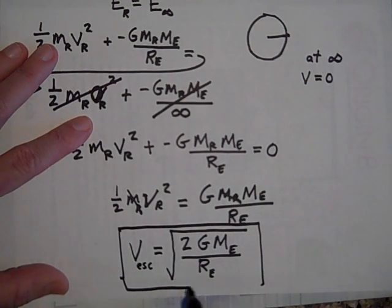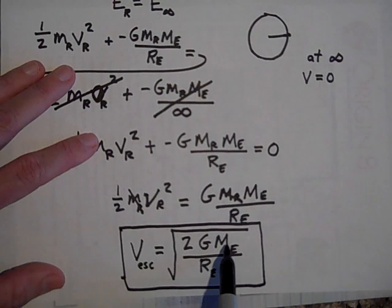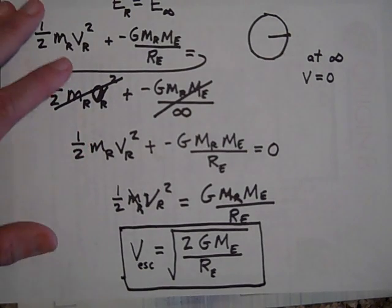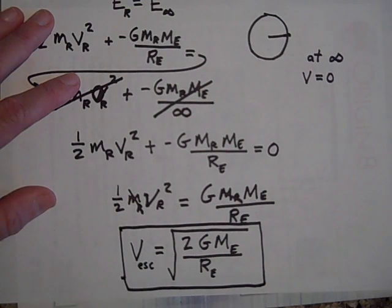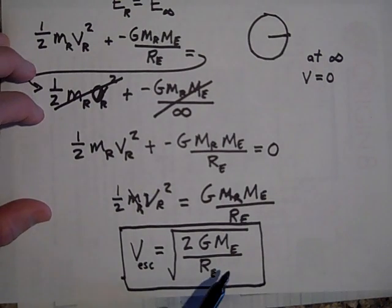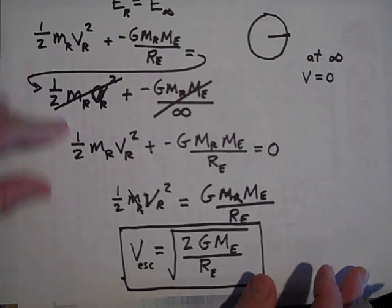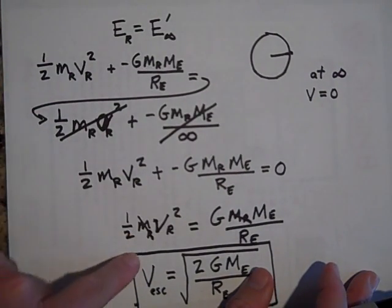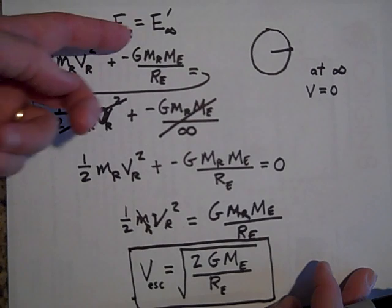To find the escape velocity of the Earth, plug in 2 times G times the mass of the Earth divided by the radius of the Earth and take the square root. Importantly, it doesn't depend on the mass of the object — a small object has the same escape velocity as a large one. Don't memorize this formula; if asked, you should be able to derive it. It's just E equals E prime — not that bad.